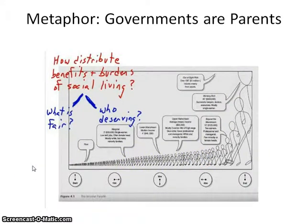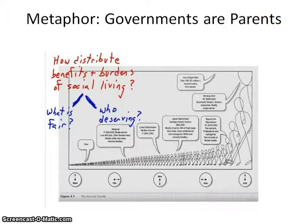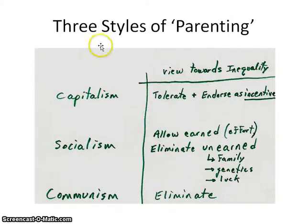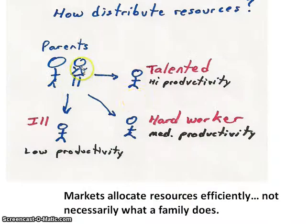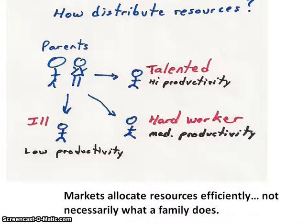From this point of view, we can think of different types of governments or different types of government-market interactions as different kinds of parents. Here are three familiar ones — we can think of them as three styles of parenting: capitalism, socialism, and communism. They're all going to be making decisions about how to make investments in the society, much as parents would make decisions in investing in their children.